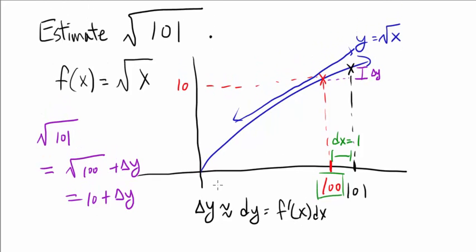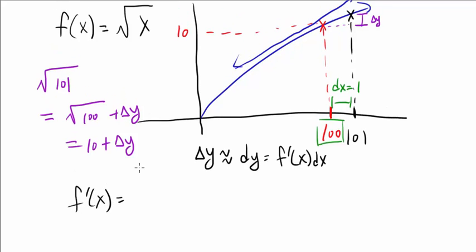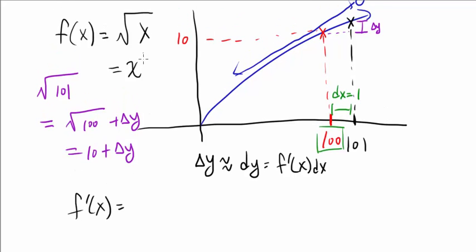So let's start by finding f'(x). We know f(x) is square root of x or x to the 1/2. So f'(x) is 1/2 times x to the negative 1/2, also known as 1 over 2 times square root of x.